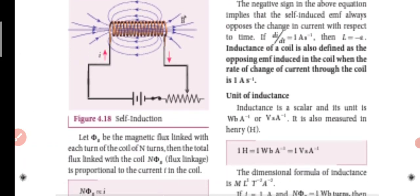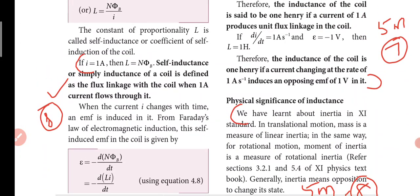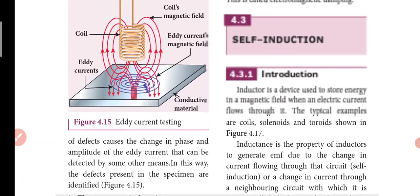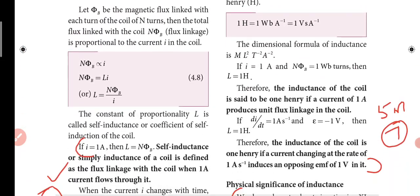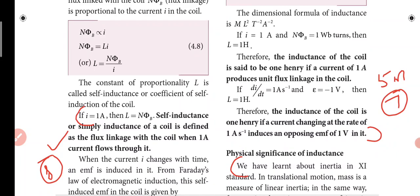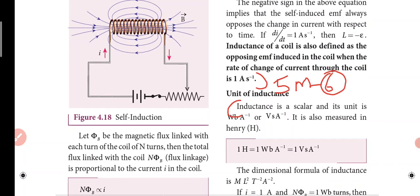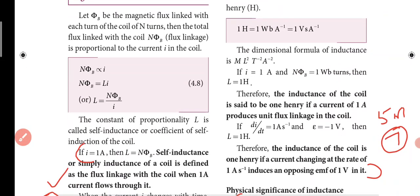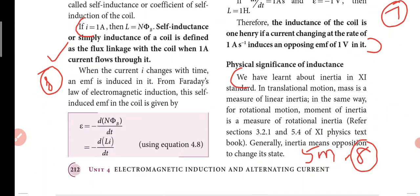Self-induction: if I equals 1A, L equals N phi B, that gets one mark. The unit of inductance paragraph is the 7th question, that's the 6th 5 mark question.